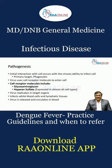What is the pathogenesis? The virus initially interacts with the cell and is able to infect it, with the primary target being phagocytes. The virus uses cell receptor molecules to enter the cell, including glycosaminoglycan and heparin sulfate.